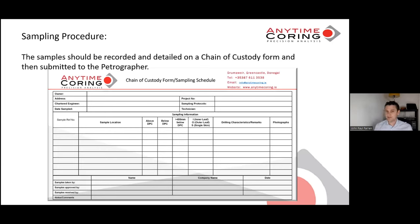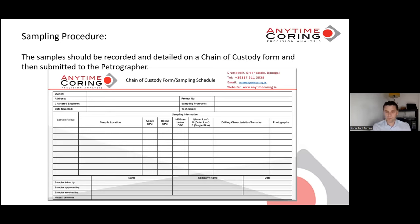We put on the geographical location of where the sample was extracted, and tick the box if it's been extracted from above DPC, below DPC, 450 mm below DPC, and inner or outer. We also put the drilling characteristics — for example, if the sample is wet or dry. We note if we've taken photos as well. 'Samples taken by' would be the coring contractor's company name. 'Samples approved by' would be the engineer's signature, company name, and date. 'Samples received by' would be for the geologist, who when opening the samples checks that all numbers in the bags and labels tie up. That's the chain of custody.